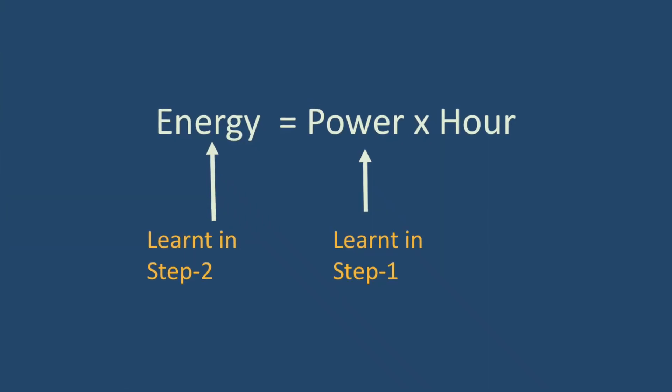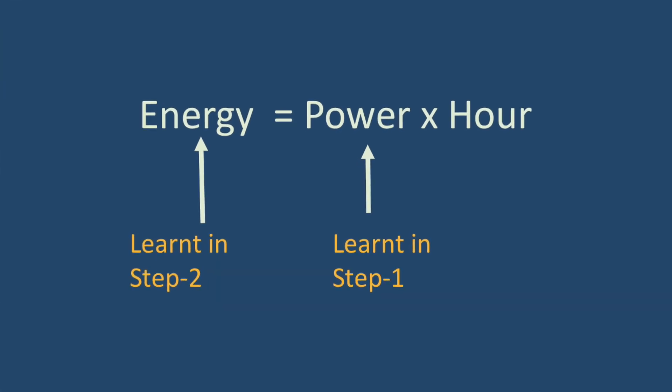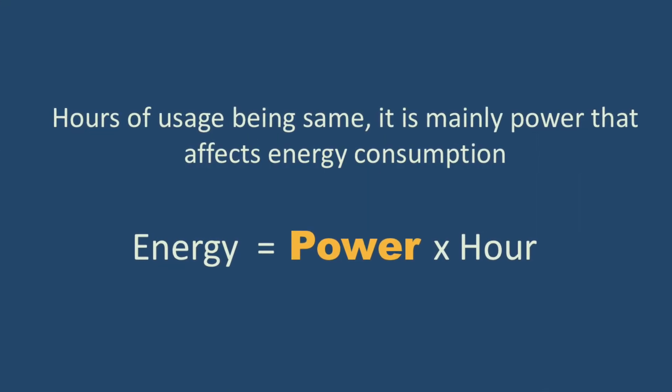Let us start discussing how much energy is consumed by an appliance and how much does it cost — what is my running cost? The amount of energy consumed by an appliance depends on the power rating of the appliance and how many hours you are going to use it. The number of hours is kind of fixed; we are not going to change it because of the solar system. So if I need a light for 10 hours, I need it for 10 hours.